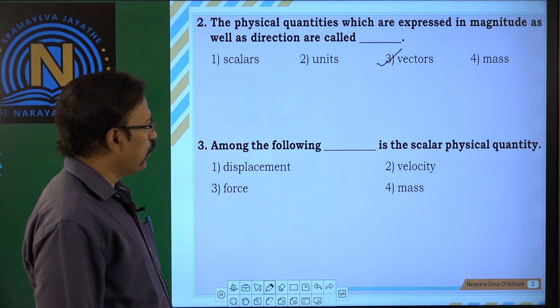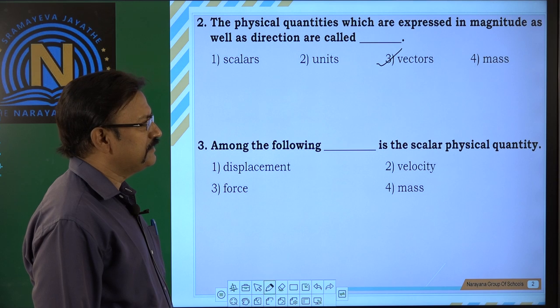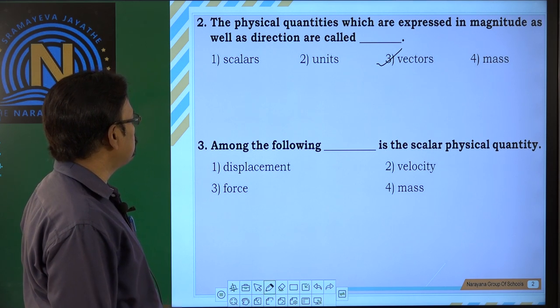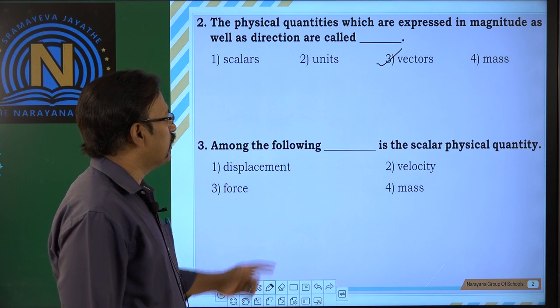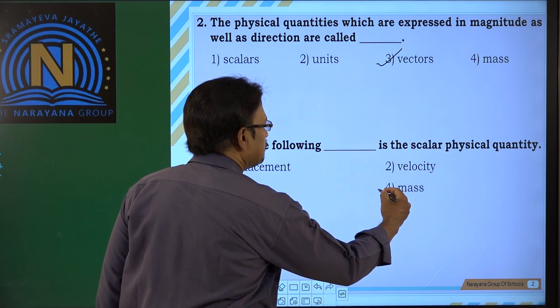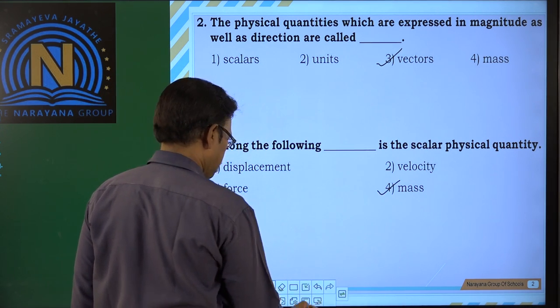Third one. Among the following, dash is the scalar physical quantity. Among these four, displacement, velocity, force. These three are vectors and mass is a scalar quantity. Okay?